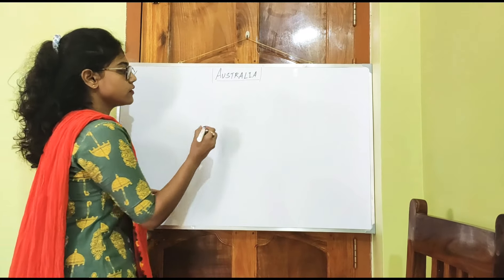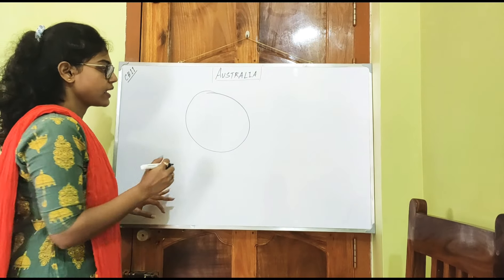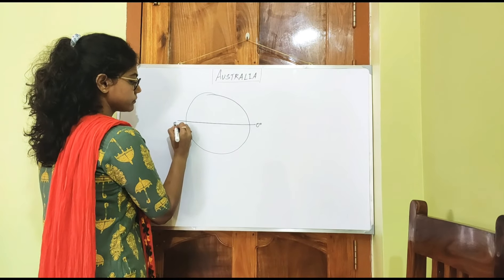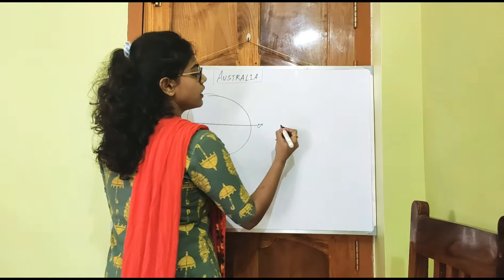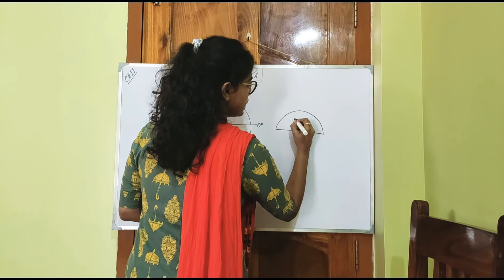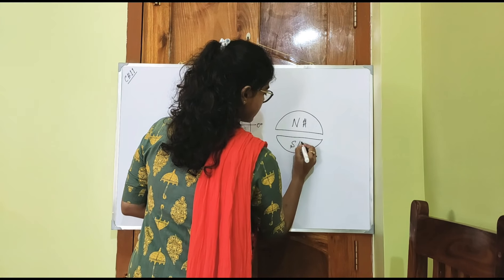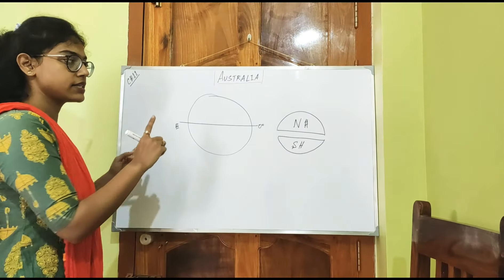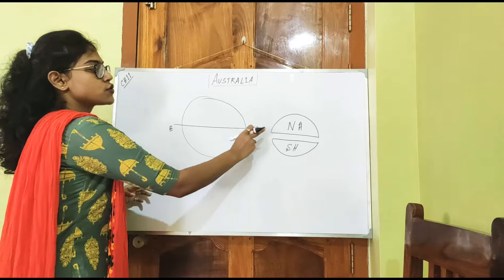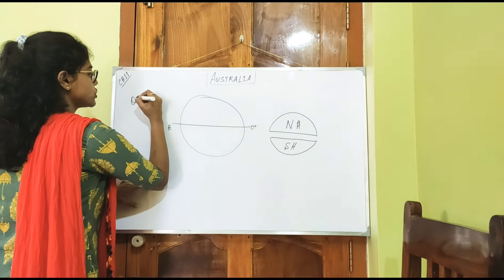First we will study where Australia is actually located. This is our Earth, and this is the equator. This equator divides our Earth into two segments: the first one is the Northern Hemisphere, and the second one is the Southern Hemisphere. Here is the Northern and Southern Hemisphere, and this Australia — or you can say the Oceania.